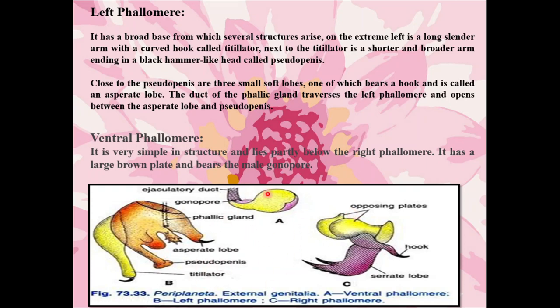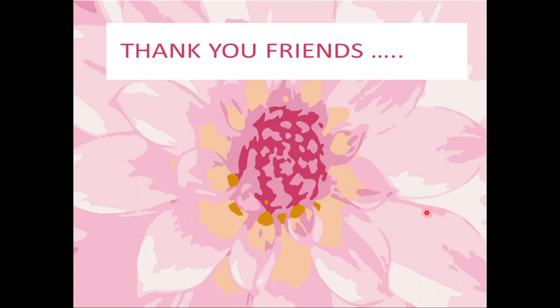Friends, short notes on phallomeres are also asked in the exam for four marks, so you have to draw the complete diagram and explain the three parts of phallomeres. This is all about the male reproductive system of cockroach. I have explained the complete structure in a simple form. Please go through the lecture once or twice, and if you have any difficulty, please ask me so that we can discuss and complete the topic.